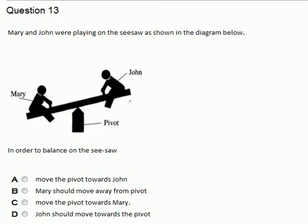Looking at the options that we have, A, B, C, and D, the only option that could balance the seesaw is to move the pivot towards where Mary is. That will reduce the distance between the pivot and Mary and also increase the distance between the pivot and where John is seated. Therefore, C was the best option or the best answer for that case.